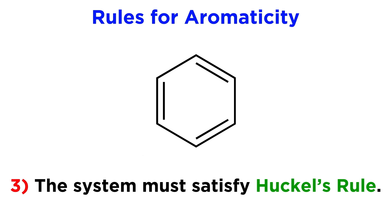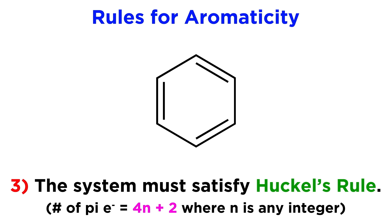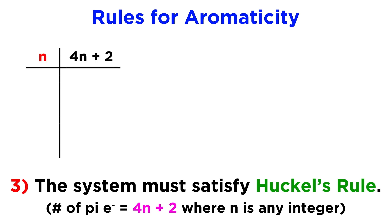Now the third rule is the one that's a bit more abstract. If a system is planar and fully conjugated, it will still have to satisfy Huckel's rule. This says that the number of pi electrons that specifically make up the delocalized system has to be equal to the expression 4n + 2, where n can be any integer. So for any integer you can plug in, it will give us a number of pi electrons that satisfies Huckel's rule. If we plug in 0, we get 2. If we plug in 1, we get 6. If we plug in 2, we get 10.